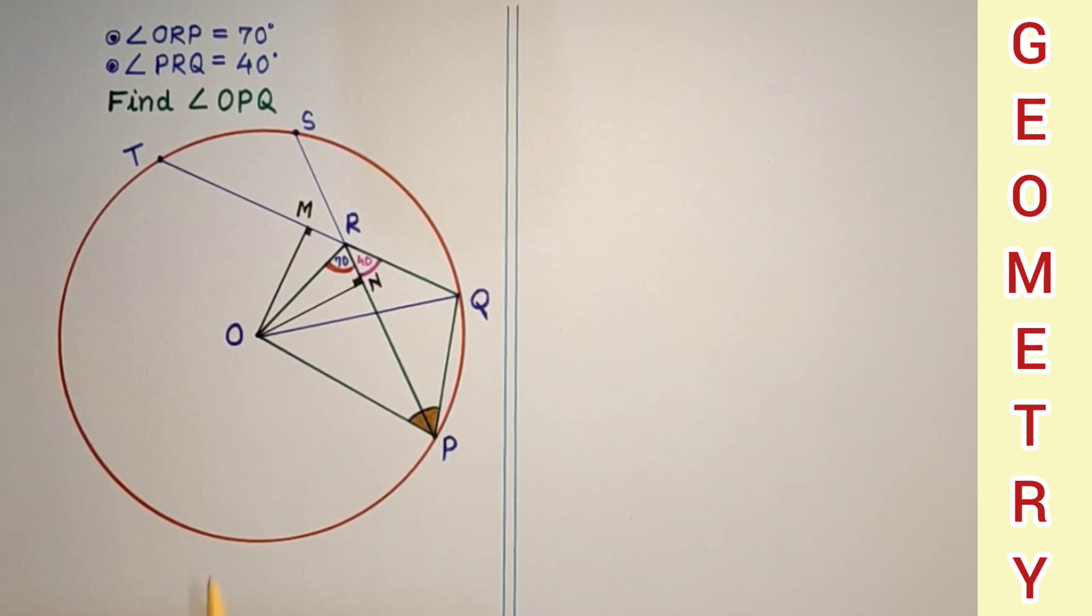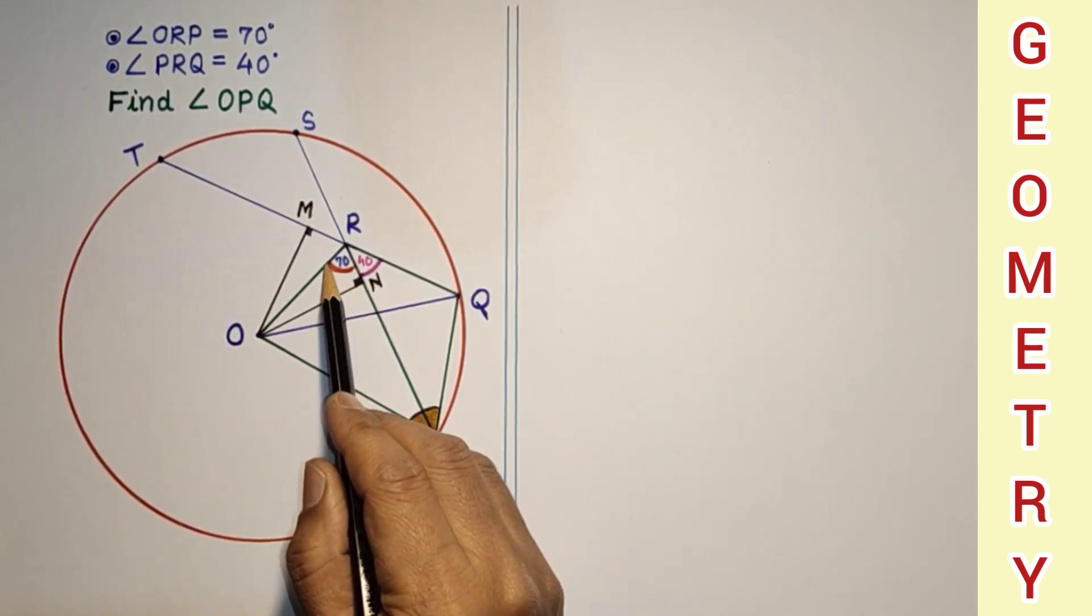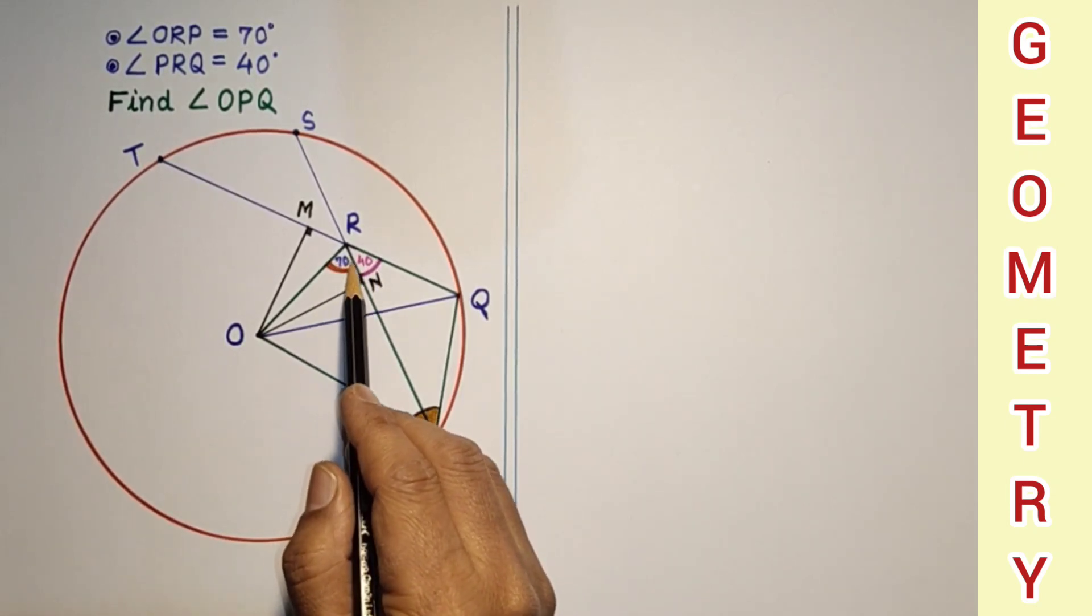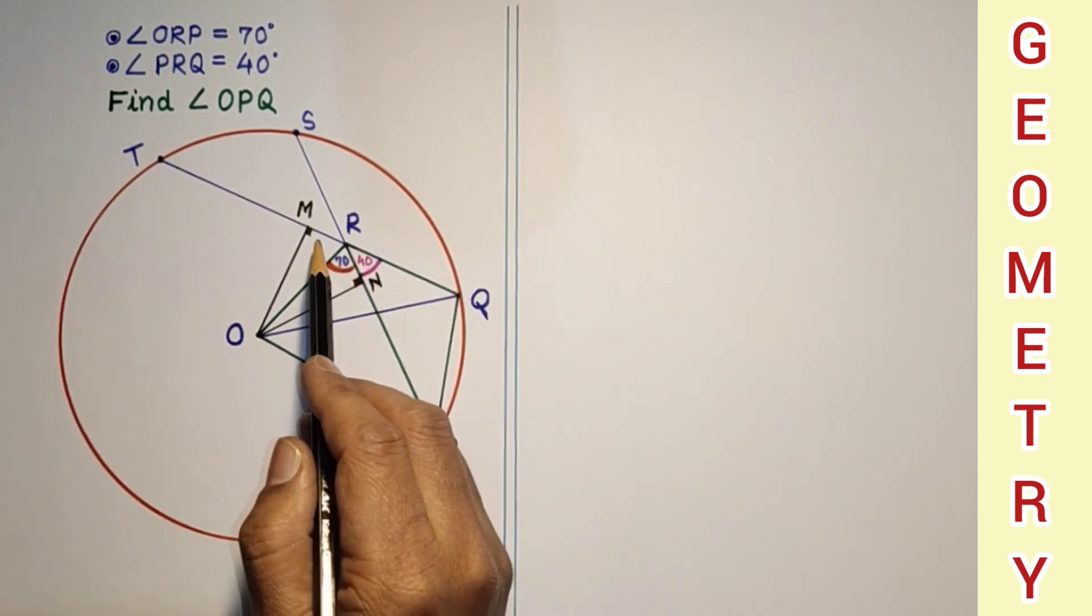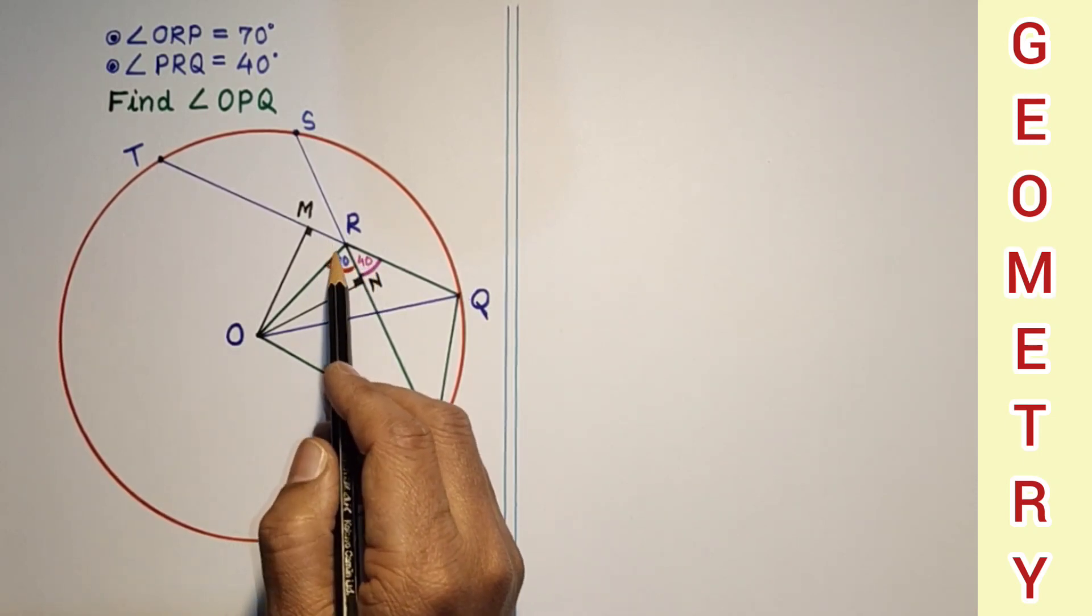Join OQ. Since this angle is 40, this is 70, 70 plus 40 is 110, and subtract 110 from 180 to get this. This is also coming 70.